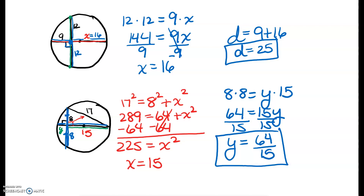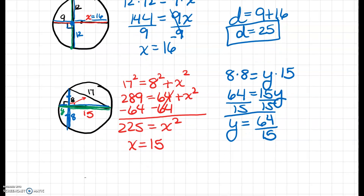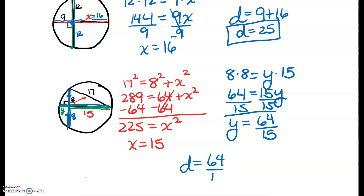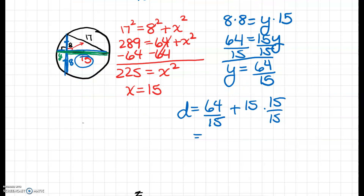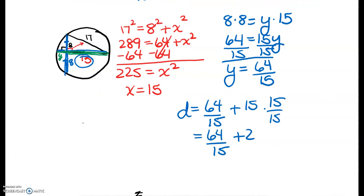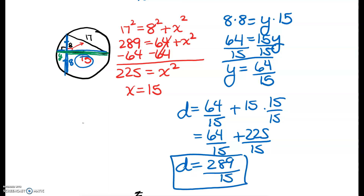I'm not done — I only solved for y, not the diameter. My diameter goes all the way across. So the diameter is 64 fifteenths, but I also have this 15 to add to it. To find a common denominator, I multiply by 15 over 15, so I get 64 fifteenths plus 225 fifteenths. So my diameter is going to be 289 fifteenths. Now I'm done — I found my diameter.